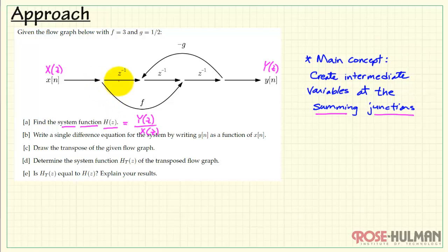The main concept that we use to analyze any flow graph is we can create intermediate variables at the summing junctions. Now as we observe here, at this point we are splitting the signal into two different paths. Here we see two coming together, so that implies a summation. We're back to a splitter because we are not bringing together two or more signals. Now the letters are arbitrary, but I'll use v of n and w of n to describe the results at these two summing junctions.